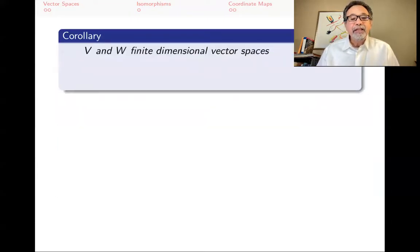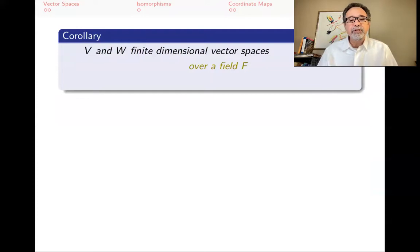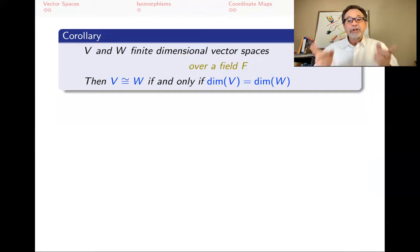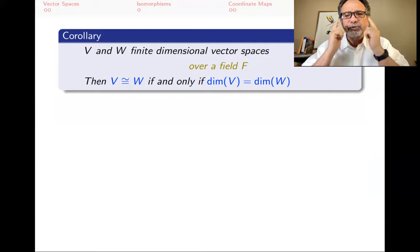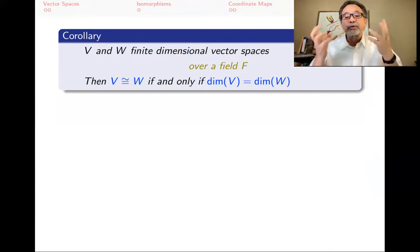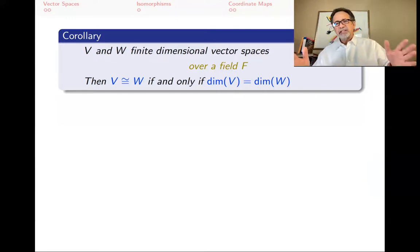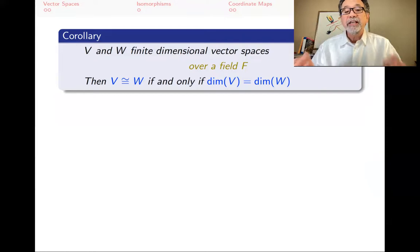Here's another corollary. If you have two finite dimensional vector spaces over the same field F, they are isomorphic if and only if their dimensions are the same. So if two vector spaces walk through the door and you're wondering if they're the same — as far as linear algebra is concerned, meaning any linear algebra question you can ask of one you can ask of the other and get the same answers — all you have to do is figure out their dimensions. If they're the same, the vector spaces are isomorphic; if not, they're not.